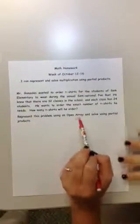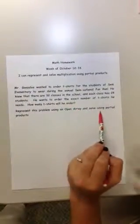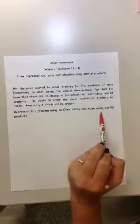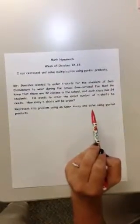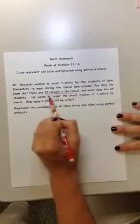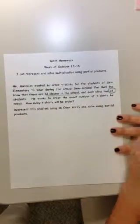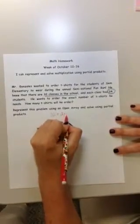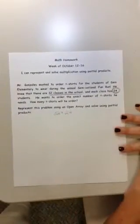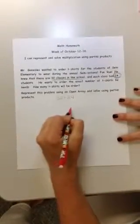So we've talked before about how open array is a great way to represent large multiplication, and if we break that large multiplication down, we get partial products that we can add together at the end to get our full product. I know that there are 32 classes in the whole school, and that each classroom has 24 students. So that multiplication sentence is 32 times 24. I'm not very good at my 32 times tables or my 24s, so I'm going to break this down using an open array.